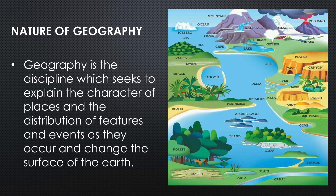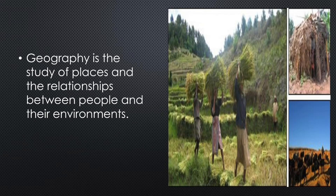Now let us see the nature of geography. Geography is the discipline which seeks to explain the character of places and the distribution of features and events as they occur and change on the surface of the earth. Geography is the study of places and the relationships between places and their environments. Geography also explores both the physical properties of the earth's surface and the human societies spread across it. They also examine how human culture interacts with the natural environment and the way that locations and places can have an impact on people. Geography seeks to understand where things are found and why they are there, how they developed and change over time.